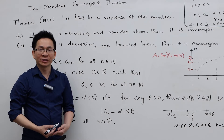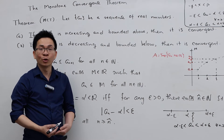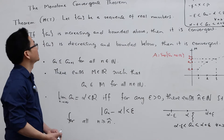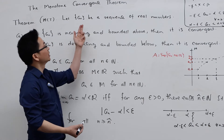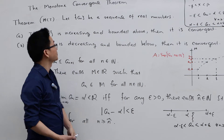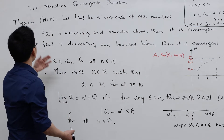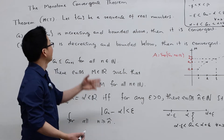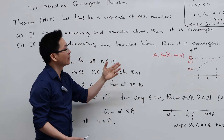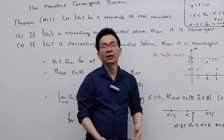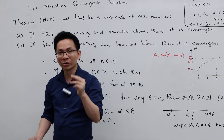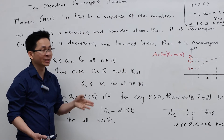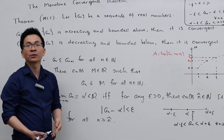In this video, I'm going to talk about the proof of the Monotone Convergence Theorem. Let me recall the theorem. Consider a sequence of real numbers. The Monotone Convergence Theorem says that if aₙ is increasing and bounded above, then it is convergent. And if aₙ is decreasing and bounded below, then it is also convergent.